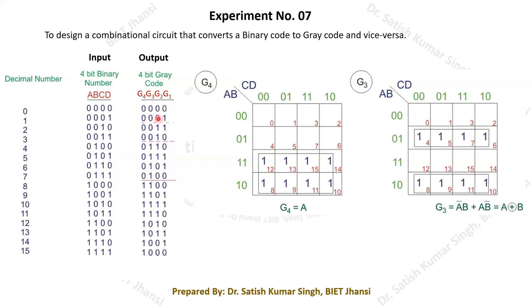For example, from 0000, the next gray code is 0001 — one bit change. The equivalent gray code for binary 0010 is 0011, where only one bit changes from 0 to 1, with all other bits remaining unchanged. That is the beauty of gray code: only one bit changes whether you move to the next or the previous number.